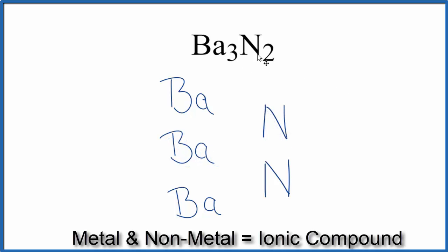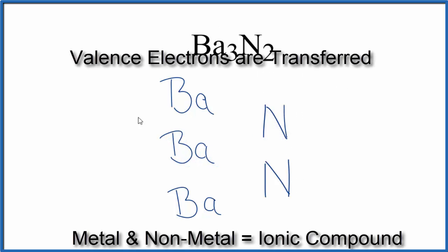Barium is a metal, nitrogen is a non-metal. We're going to treat this as an ionic compound. That means the electrons will be transferred from the metal to the non-metal.